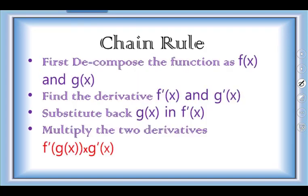The chain rule is used for composite functions. One of the first things we do is decompose the function and write them as two separate functions f(x) and g(x), where g(x) is going into f(x). The steps are: first, decompose the function; second, find the derivative of both f(x) and g(x); third, substitute g(x) into the derivative of f(x); and finally, multiply the two derivatives to get the derivative of the composite function.